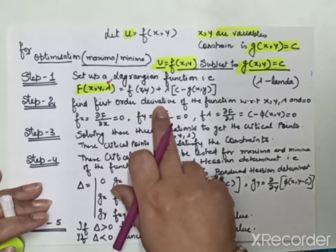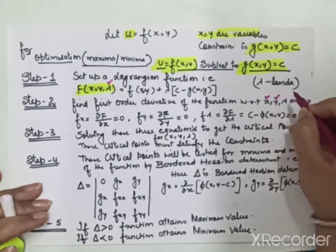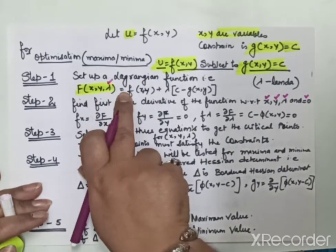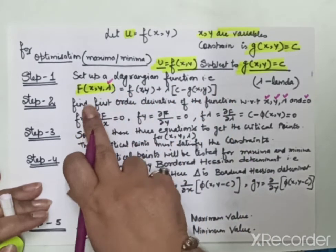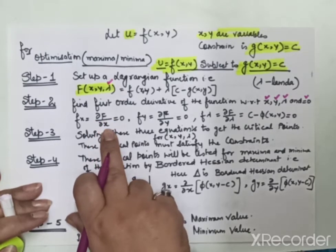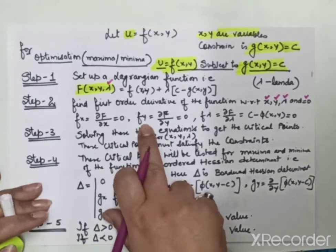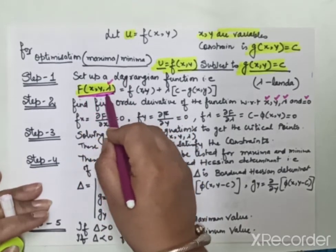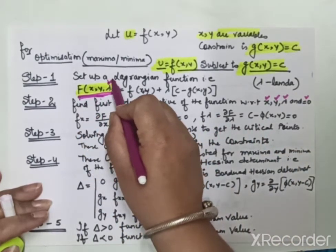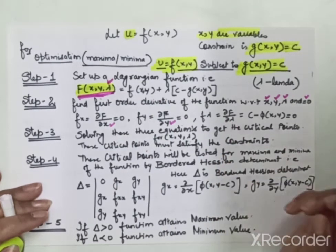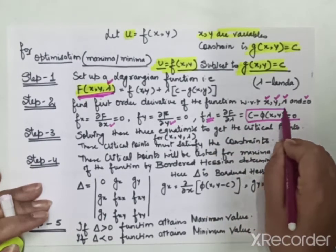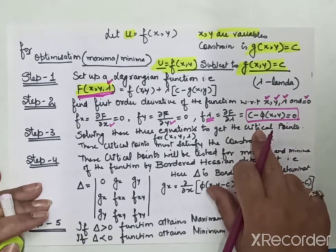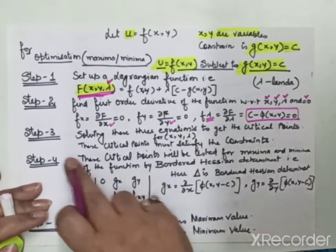Step 2: Find the first order derivatives of the Lagrangian function with respect to x, y, and lambda, and set them equal to zero. So we compute ∂f/∂x (which gives fx), then ∂f/∂y (which gives fy), and finally ∂f/∂λ. The derivative with respect to lambda gives us c minus g(x,y) = 0, which is our constraint. This completes step 2.